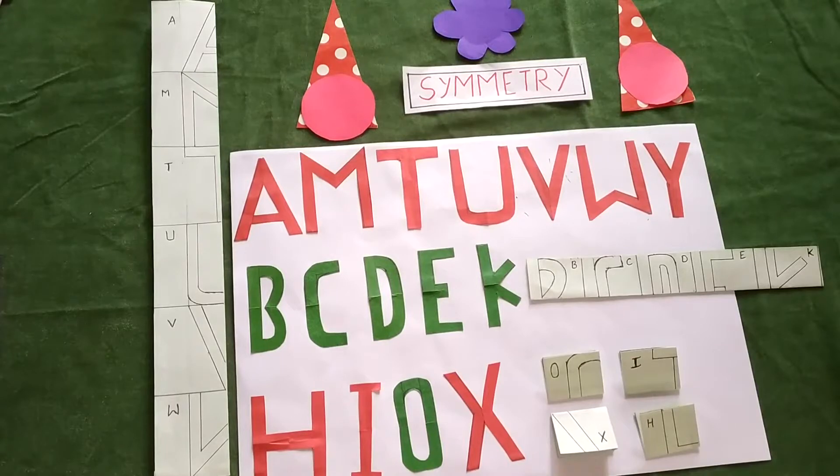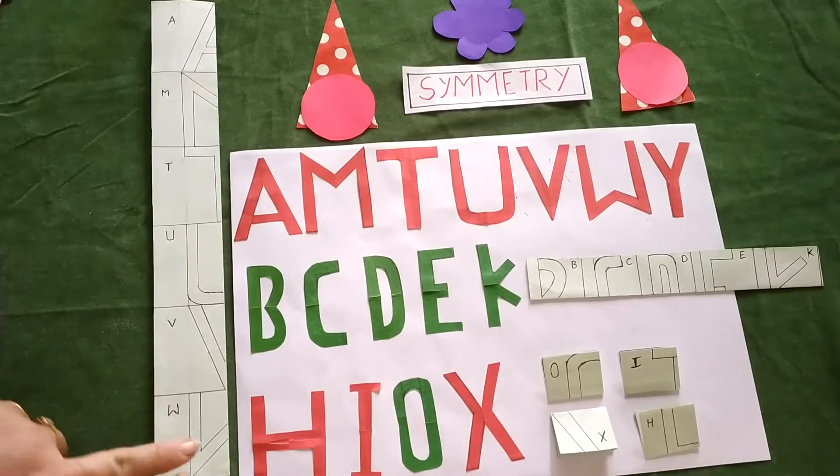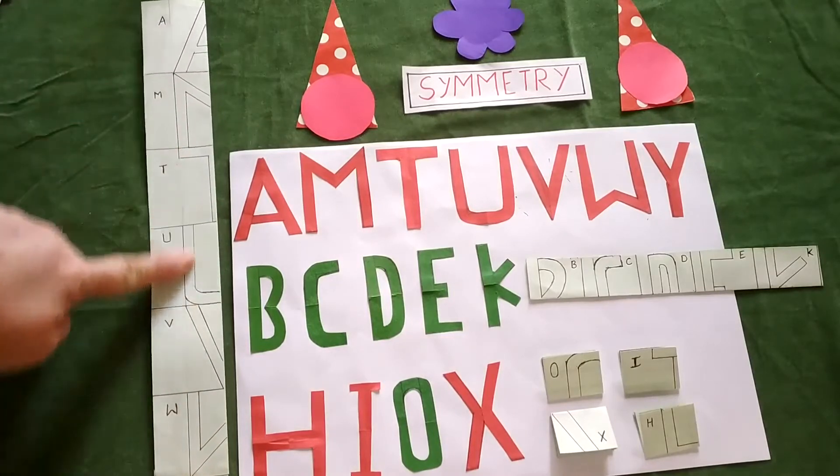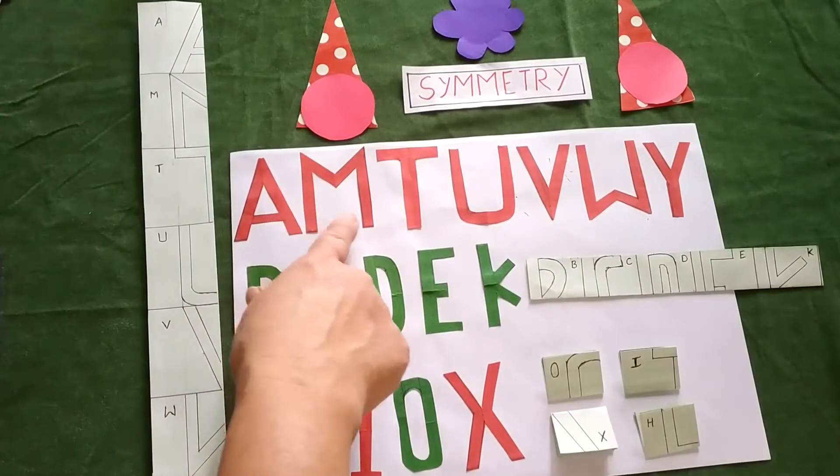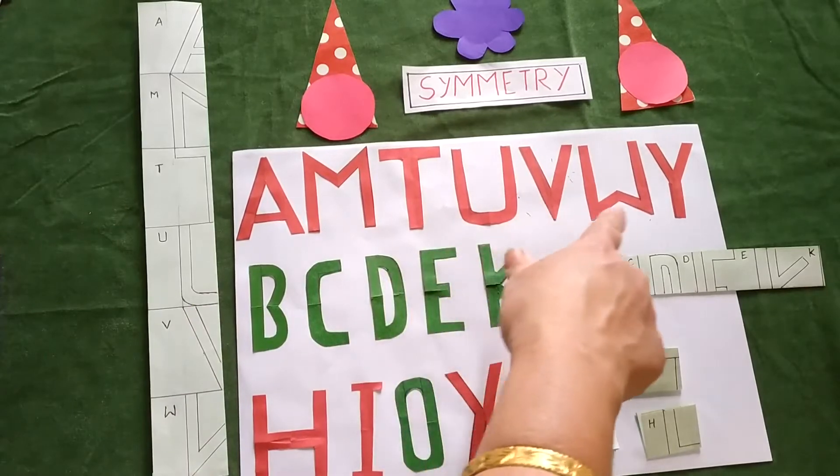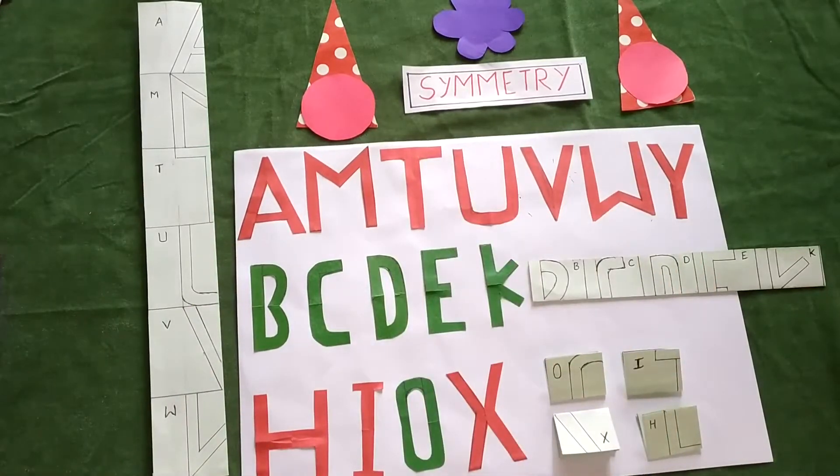The first group is where you can see the line of symmetry is vertical. So here you can see that this is the vertical line of symmetry. So in letter A, M, T, U, V, W, Y, you can see that vertical line of symmetry.